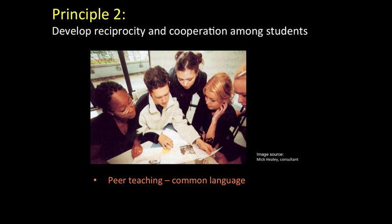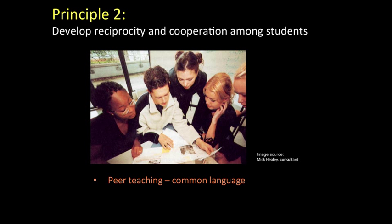So design some simple activities in the early stages of the course that encourage the students to get to know each other. Also consider asking your students to teach another student a small part of the curriculum and have the other student critique that effort. As teachers we already know that deep learning occurs when we have to teach something to others. It's the same for students. These kinds of learning activities can be in class or online.